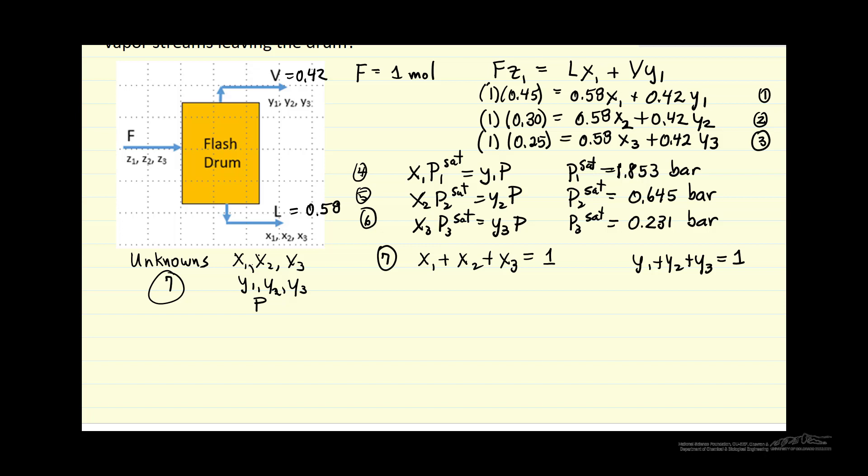But it turns out to be redundant, and I'll show later if we add these 3 equations, equations for the mass balances, and we use equation 7, we end up with this equation. So this is not an independent equation. So we have 7 equations, 7 unknowns.